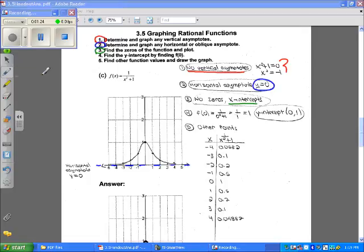Now we're going to find the y-intercept. To find the y-intercept, we plug in 0 for x. So if we look at this function, if we plug in 0 for x right here, we get 1. So the y-intercept is 0, 1.